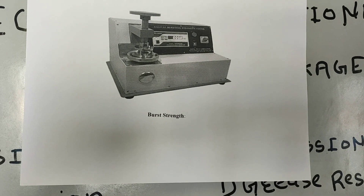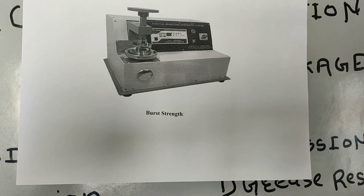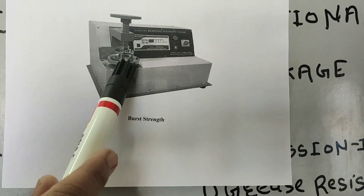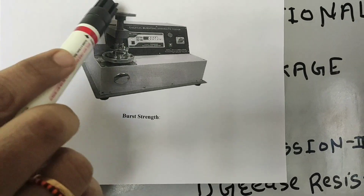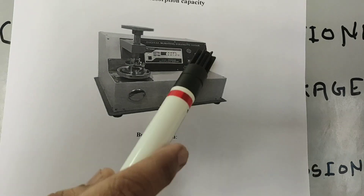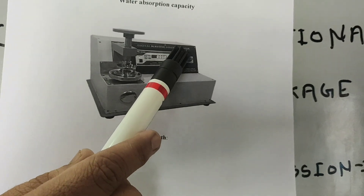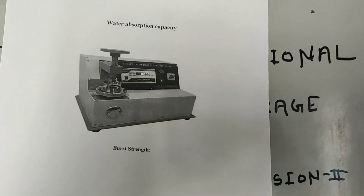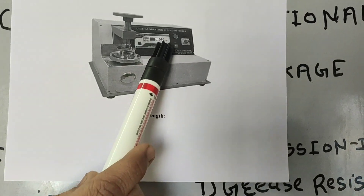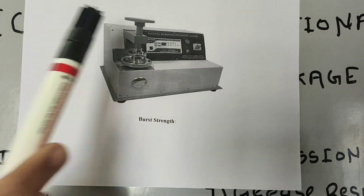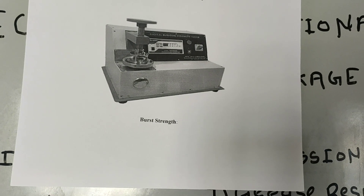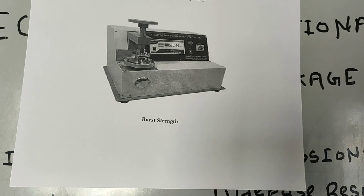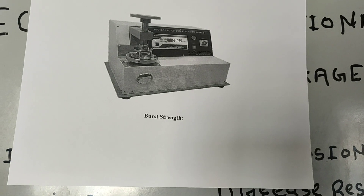As shown in the diagram, you cut the sample using a GSM cutter and place it in the instrument. By lifting the clamp you place the sample and lock it. Then, pressing the pressure button, you apply pressure and read the bursting strength on the display. When a sound is heard, stop pressing and read the value.